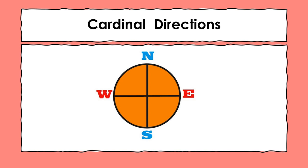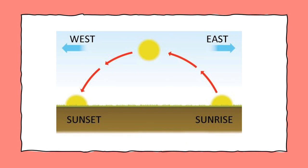To remember the placement of these directions, I have a small chant: 'North is up, South is down, East is to my right side, and West is to my left side.' Let's do it once again — North is up, South is down, East is to my right side, and West is to my left side. And you know what, the sun always rises in the East and sets in the West. If you know the direction of sunrise, you can easily tell the other three directions.